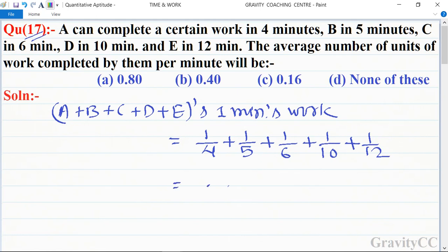So it's equal to, its LCM is 60. So 15 plus 12 plus 10 plus 6 plus 5, is equal to 48 upon 60. Therefore,